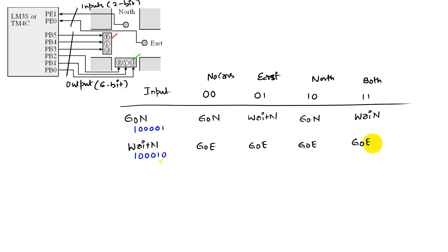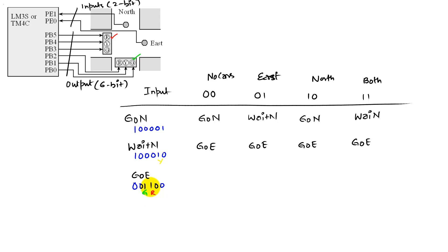Our new state is go east, which kind of mimics go north. The output in go east ought to be 0, 0, 1, 1, 0, 0 — basically saying we have a red for the north and a green for the east.